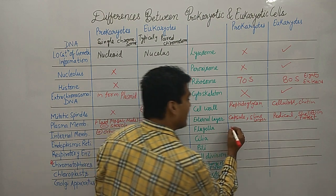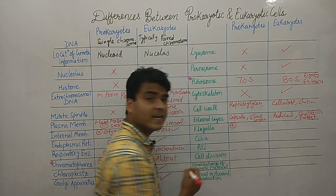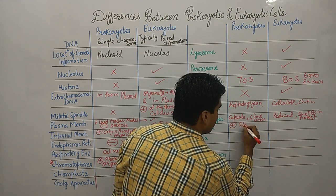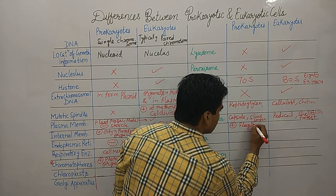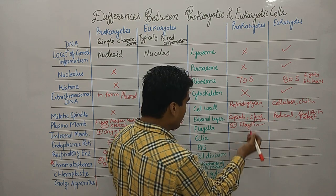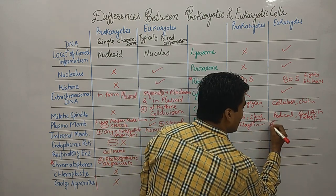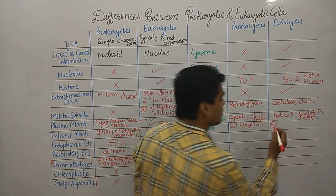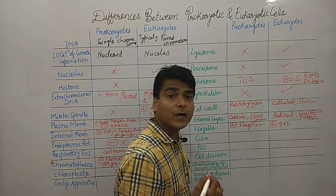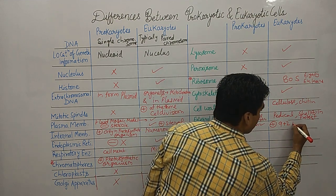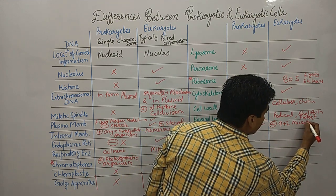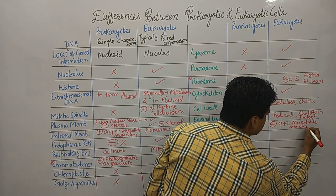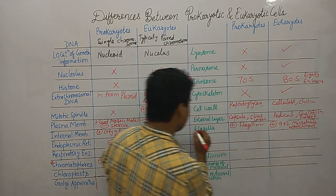Flagella are present in prokaryotes and contain flagellin protein. In eukaryotes, flagella are also present but have a complex structure of nine-plus-two microtubule arrangement. This is an important point that examiners always ask about.